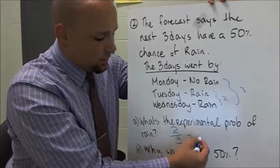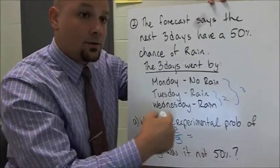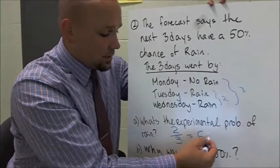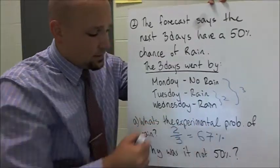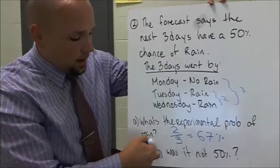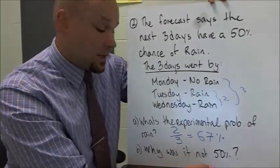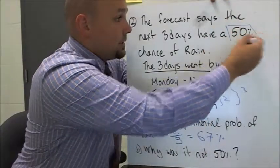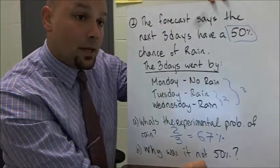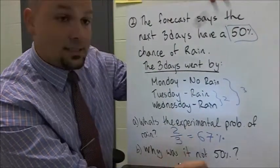If we do that on our calculator, two divided by three times 100, we get 67 percent. So why was it not 50 percent? Because the guy predicted 50 percent and it was actually 67 percent.